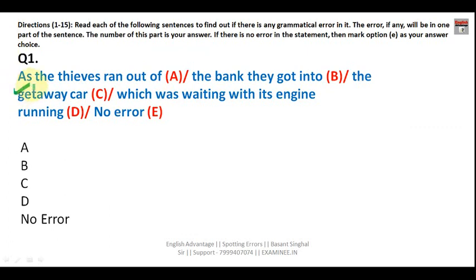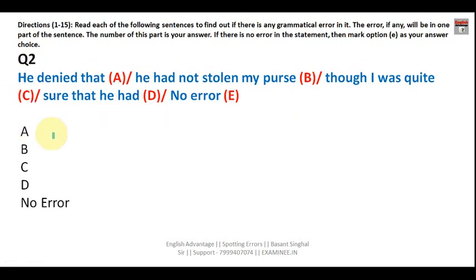Question one: 'As the thieves ran out of the bank, they got into the getaway car which was waiting with its engine running.' Through 'as' we denote two actions happening at the same time, but here one action happens first and then the second. First the thieves ran out of the bank, and then they got into the car. So in place of 'as,' you write 'when.' Your answer is A.